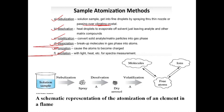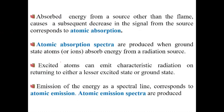Energy absorbed from a source — generally a hollow cathode lamp — causes a decrease in the signal from the source corresponding to atomic absorption. The radiation coming from the hollow cathode lamp gets attenuated, meaning its intensity decreases because it is absorbed by the atoms. That decrease in intensity is measured. Atomic absorption spectra are produced when ground-state atoms absorb energy from a radiation source.